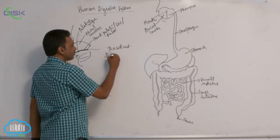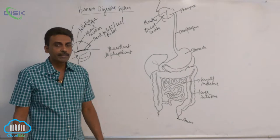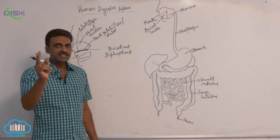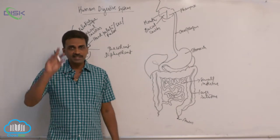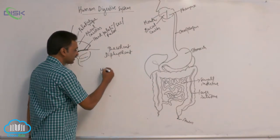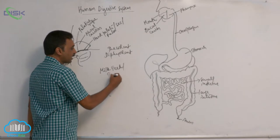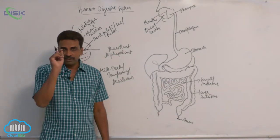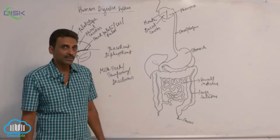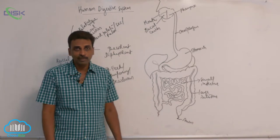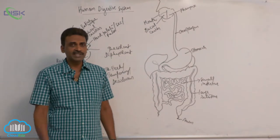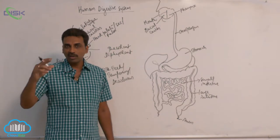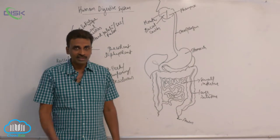Diphyodont dentition. In case of human beings, there is diphyodont dentition — two sets of teeth are seen during a lifetime. The first set of teeth is called milk teeth. They are also called temporary teeth or deciduous teeth. The first teeth erupt after about six months after birth; between the sixth and twenty-fourth month, teeth are erupting.